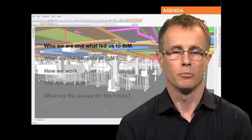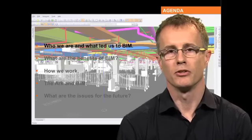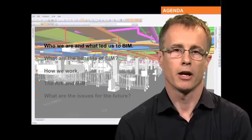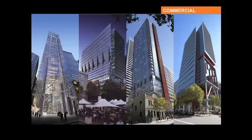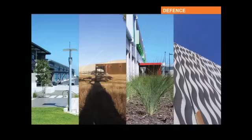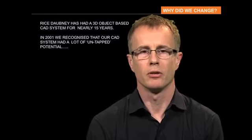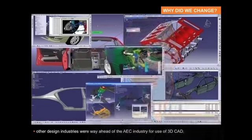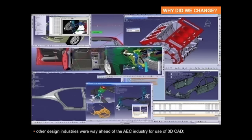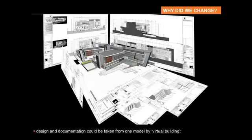So who are we and what led us to BIM? We're a major architectural practice based predominantly in Sydney with a small office in Brisbane, about 105 people in total. We work in commercial, retail, health and research, and defence sectors. In about 2001 we took a step back from our CAD software and really thought that we weren't getting the best out of it. We knew that other industries were producing work like this—the automotive industry, shipbuilding, aircraft industries. We knew it was possible to take design and documentation from one model by virtual building because our software vendor Graphisoft were telling us that, but we really weren't doing that.